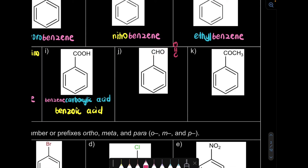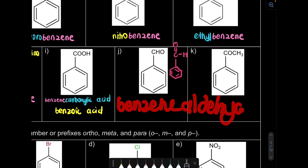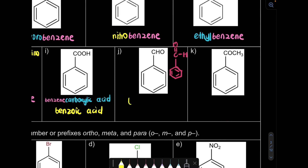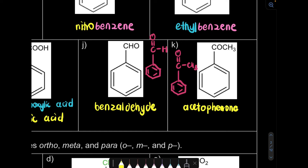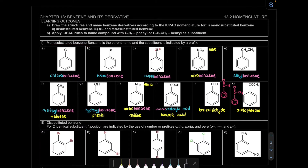For question J, CHO is your aldehyde. The carbon already has four bonds. So if we combine it, it becomes benzene aldehyde, or we usually call it benzaldehyde. For question K, we still have a C double bond O, but now the C=O is attached to CH3. The name most commonly used is acetophenone. So that concludes mono-substituted benzene.